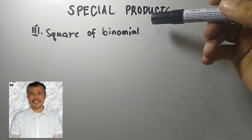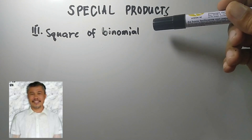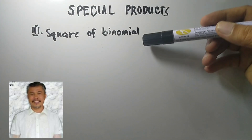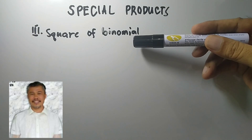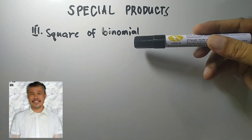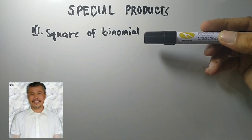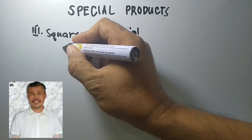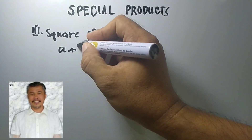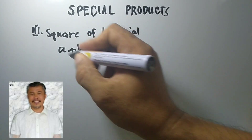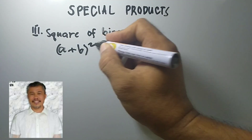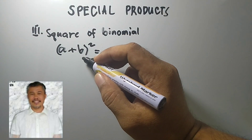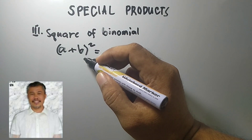Hi there, welcome to Sirmatico channel. Today I will discuss the third special product, which is the square of a binomial. The first and second special products I have already discussed, and I will paste the link of my video in the description below. We have a plus b squared, and to get the product of this we can use the FOIL method.